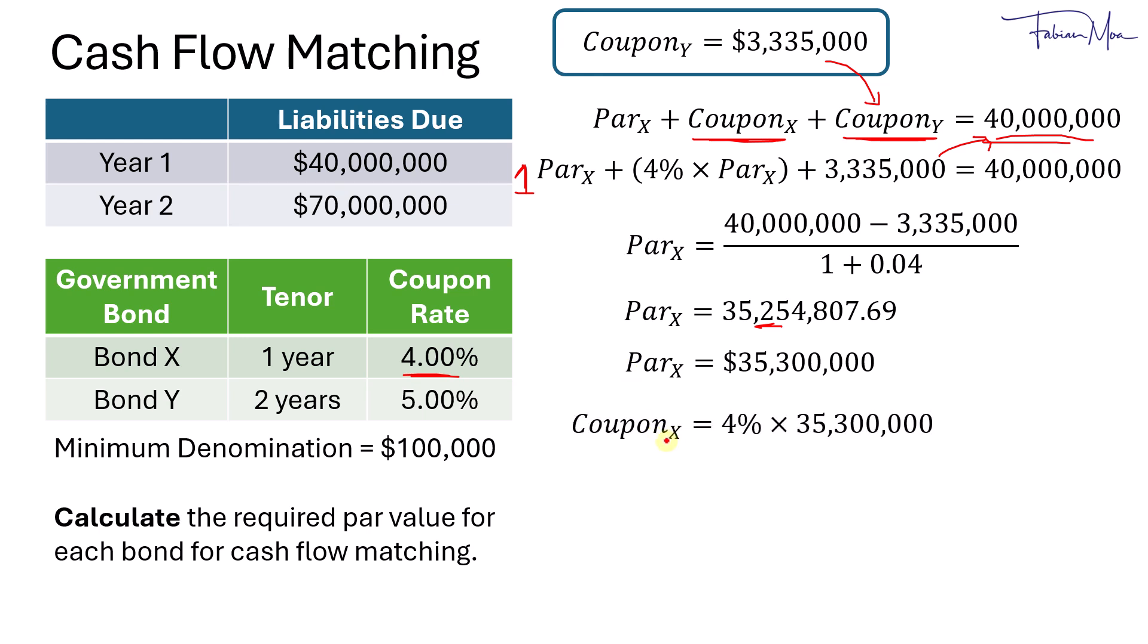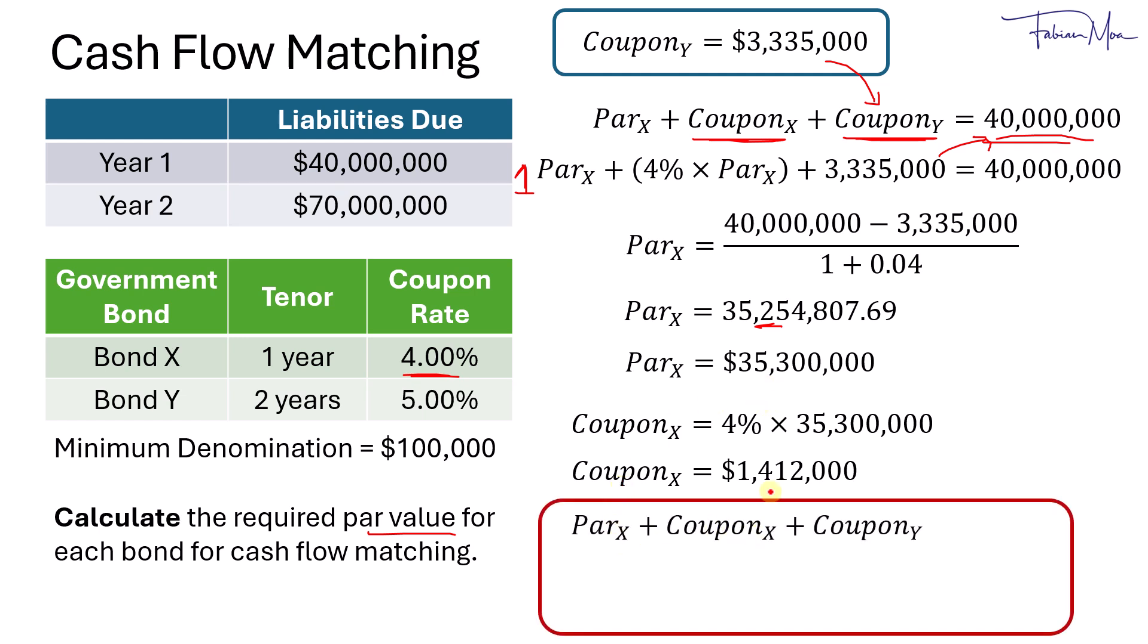And to get the coupon of bond X, we'll take 4% the coupon rate times the par value. And that would be $1,412,000. We don't need this because we only need the par value for each bond. But just to do a quick check to make sure that the number makes sense. If we take the par value of bond X, plus the coupon of bond X, plus the coupon of bond Y, if we add all them up together, we will get slightly more than 40 million dollars. So again, we round up in this case because we want to have an excess. If you were to round down to 200,000, then there will be a deficit or a shortfall.